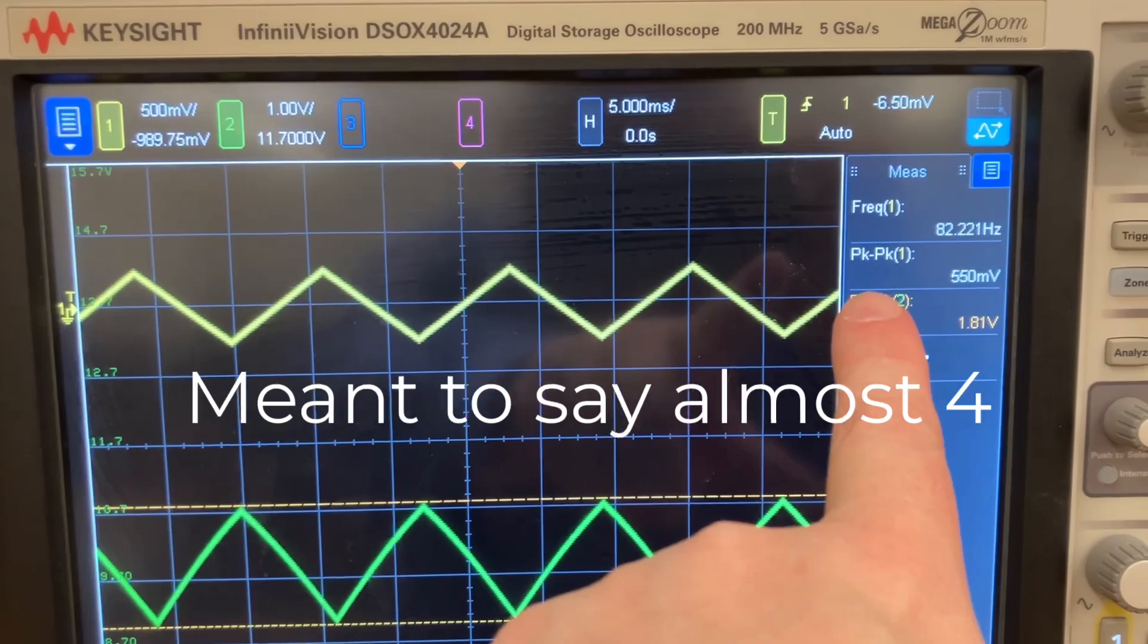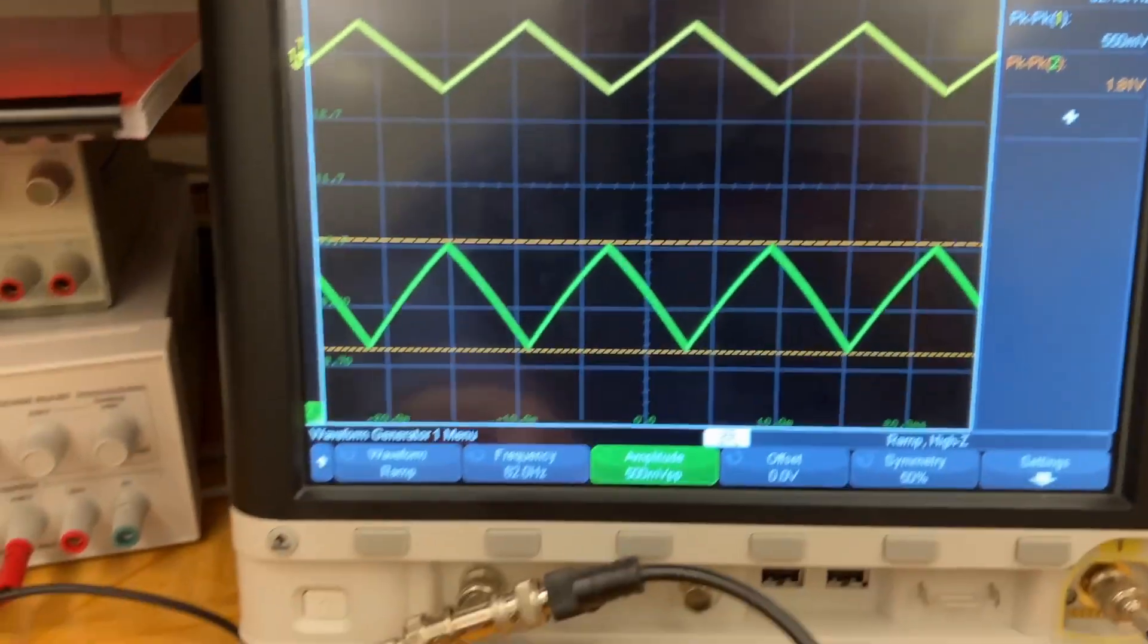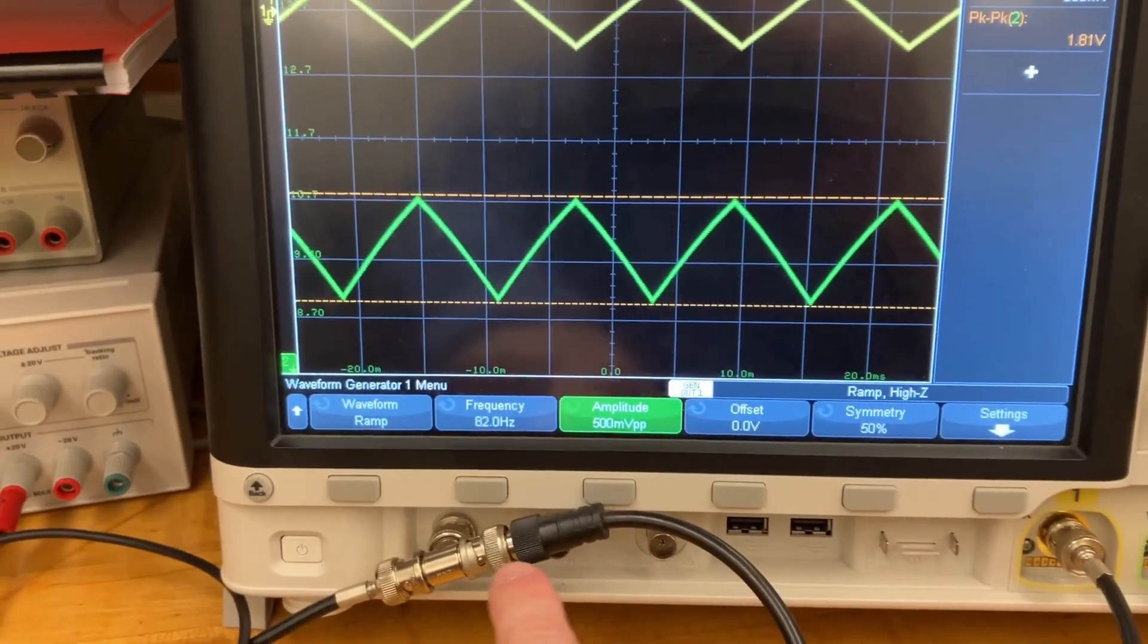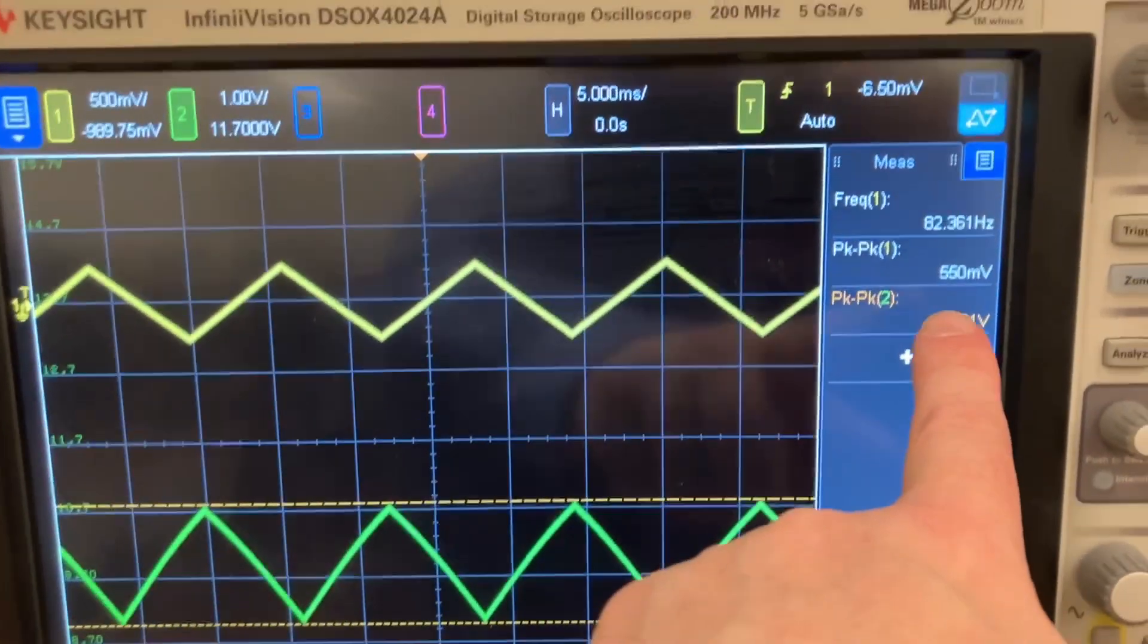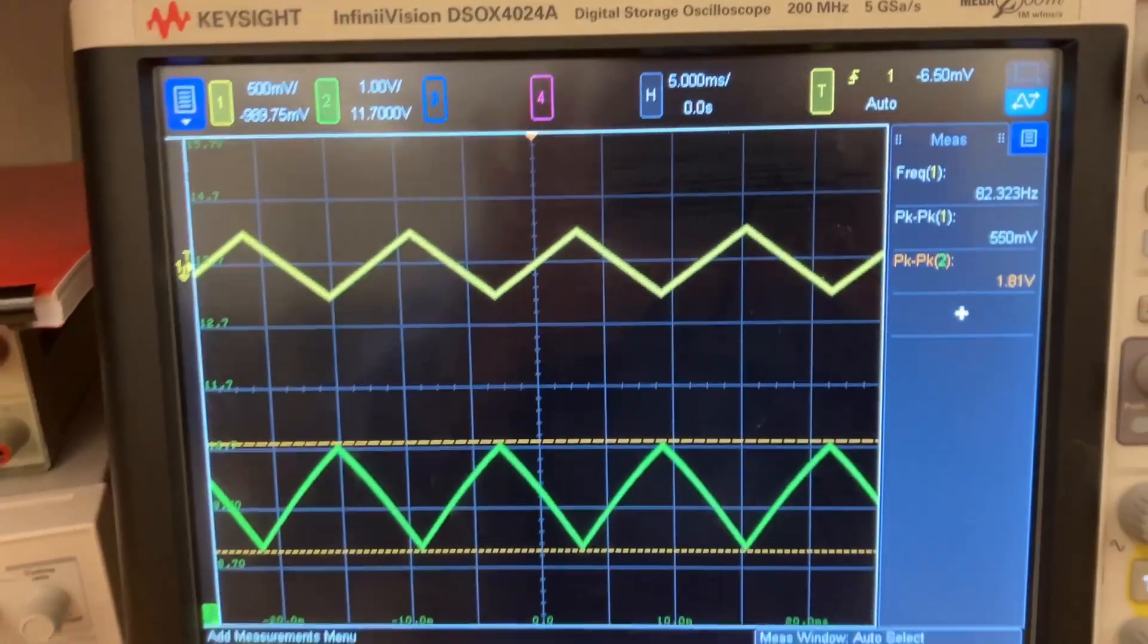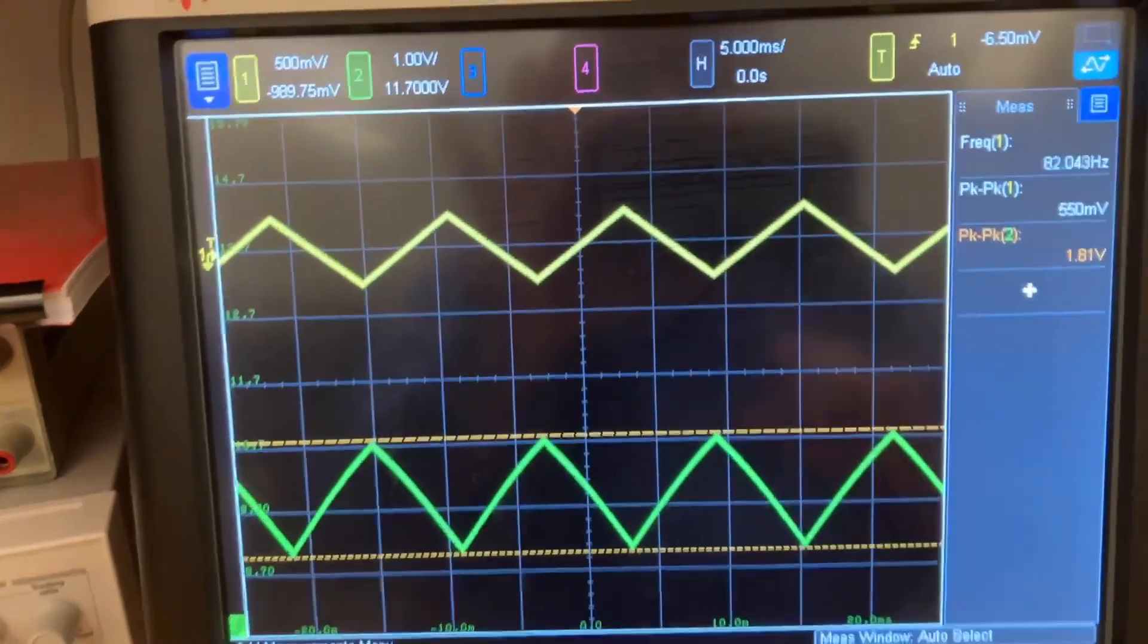Although when I measure the peak-to-peak signal from the scope—from the wave generator in the scope to the input of the scope—it's actually measuring a little bit higher. I'm not sure what's going on there.